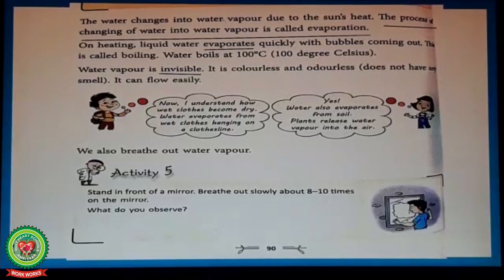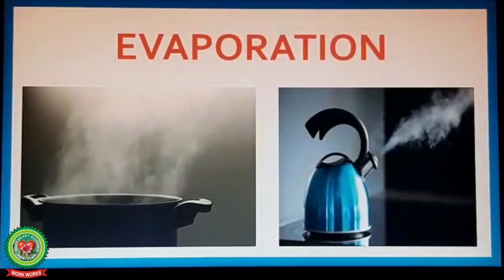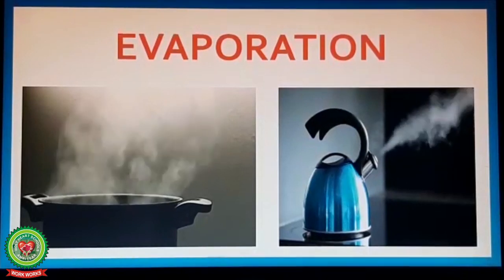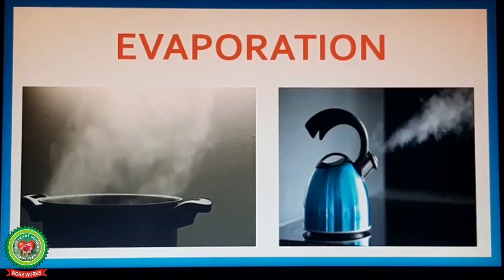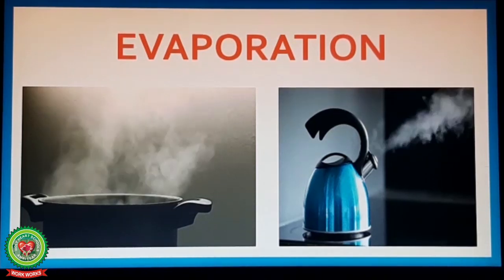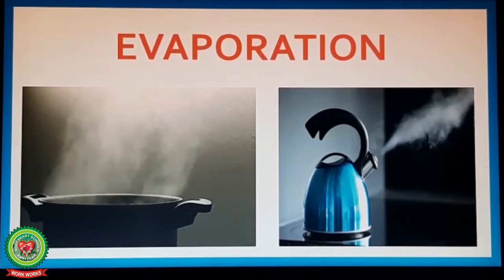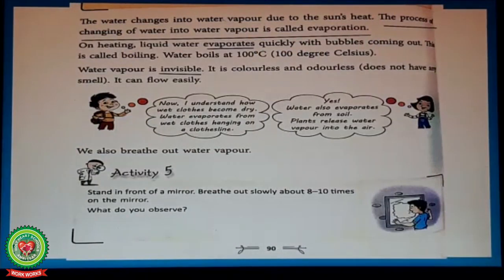The water changes into water vapor due to the Sun's heat. The process of changing water into water vapor is called evaporation. Underline this line. There are many water bodies that surround us. Due to the heat of the Sun, this water gets very hot and therefore changes into gas or steam. This changing of liquid water into gas is called evaporation.